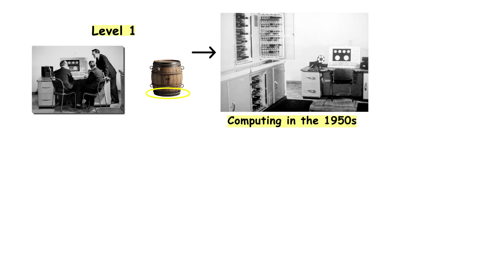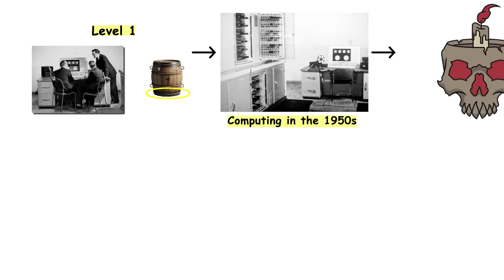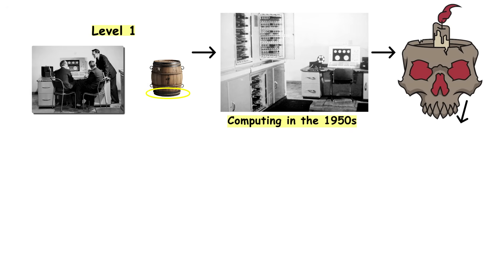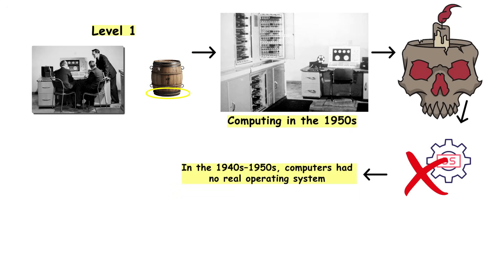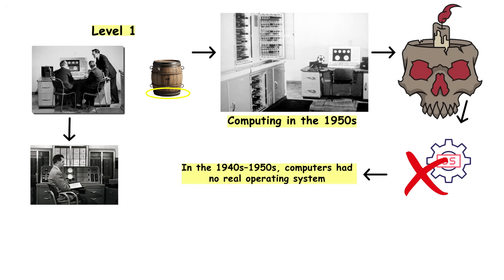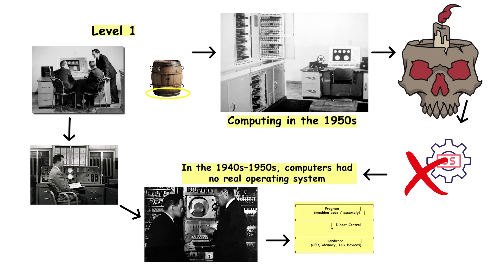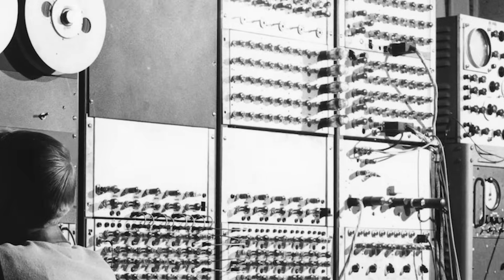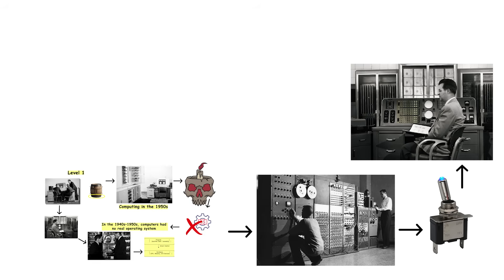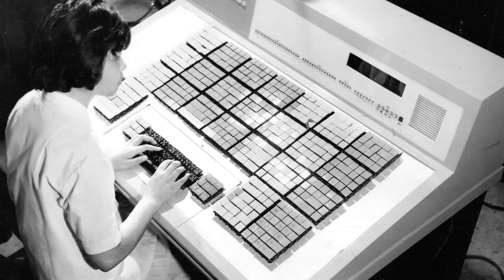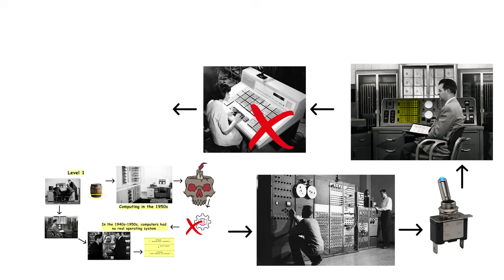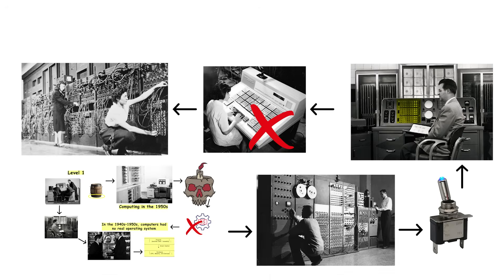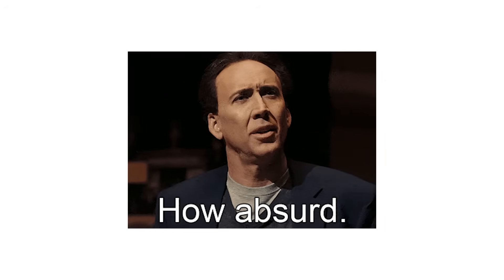This is computing in the 1950s, and it was brutal. No operating system as we know it today. Programs ran directly on the hardware with zero abstraction. If you wanted to run a program, you literally had to flip toggle switches on the front panel of the computer to input machine code — not typing on a keyboard, physically flipping switches to represent ones and zeros.